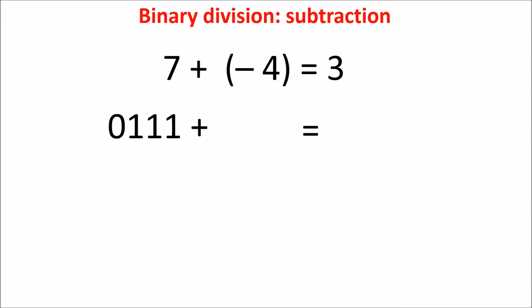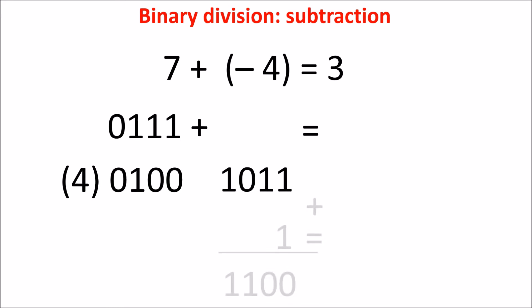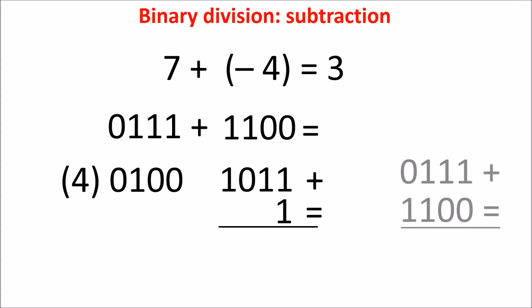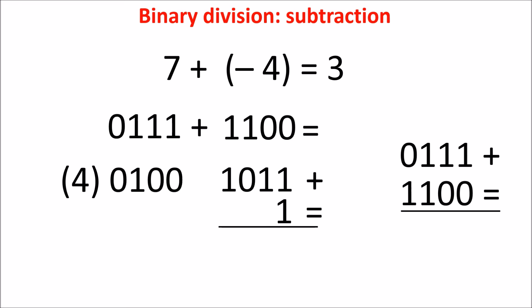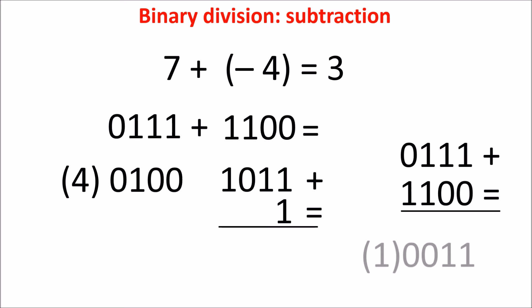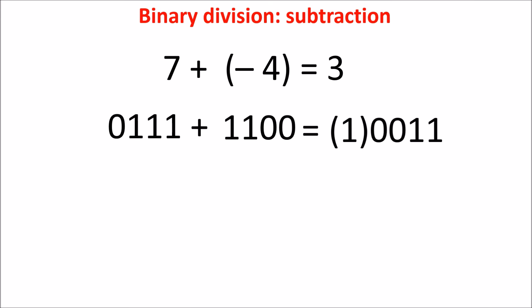Now I can do a subtraction in binary by adding 7 to minus 4. I obtain minus 4 by taking 4, inverting it, and adding 1. So now I sum 7 (0111) plus minus 4 (1100), and this equals 0011, which is 3, plus a carryout on the most significant bit, which normally we neglect. But in our case it is very useful, because it appears only when the difference between the minuend and the subtrahend is positive.